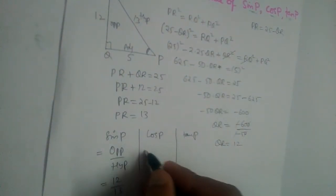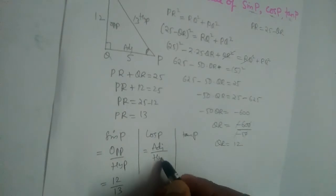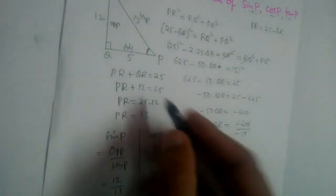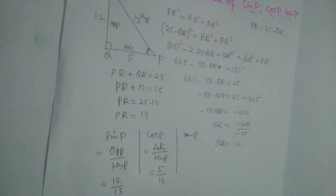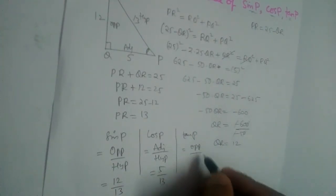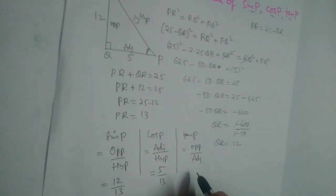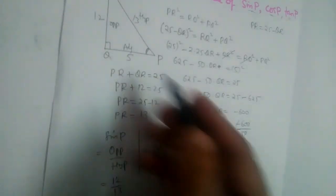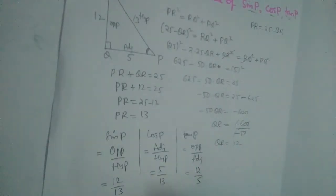And what is cos formula? Adjacent by hypotenuse. What is adjacent here? 5. Hypotenuse 13. So 5 by 13. What is tan? Opposite by adjacent. Tan formula is opposite divided by adjacent. What is opposite side? 12. Adjacent is 5. So 12 by 5.